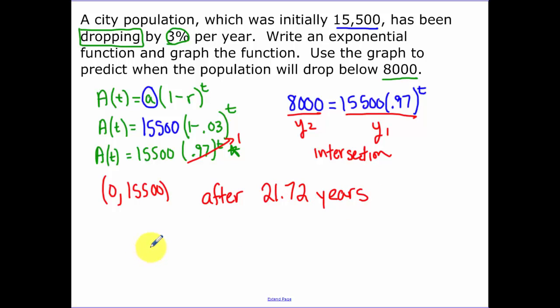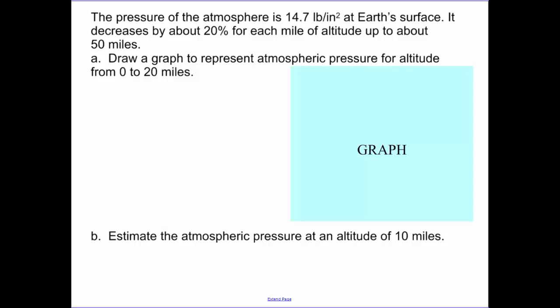You're not going to be able to do this work without a calculator, so it's imperative that you have a calculator. Next problem. The pressure in the atmosphere is 14.7 pounds per square inch at the Earth's surface. It decreases, so again we have another decay function, by about 20% for each mile of altitude up to about 50 miles. Draw a graph to represent the atmospheric pressure for altitude from 0 to 20. So we need first an expression or an equation. Since we're decreasing, it's a decay function. Our initial amount, when I was first looking at this problem, I was trying to figure out what's our initial amount. It says the pressure of the atmosphere is this amount at the Earth's surface, so that's going to be our initial amount.